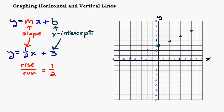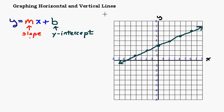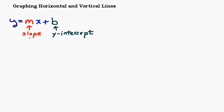You can also go the opposite direction: down 1, left 2 — because a negative divided by a negative is the same as a positive, that will also give you the same line. So there's your line; that's how we graph lines using slope and y-intercept. Now let's clear this out and bring in a new graph to talk about horizontal and vertical lines.